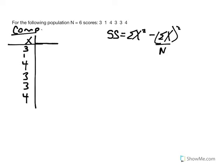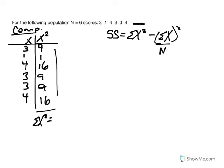Given this equation, we square all our scores: 9, 1, 16, 9, 9, and 16. Sigma indicates we sum all those squared scores, giving us 60. From our previous calculation of the mean, the sum of x is 18. So SS equals 60 minus 18 squared over 6.